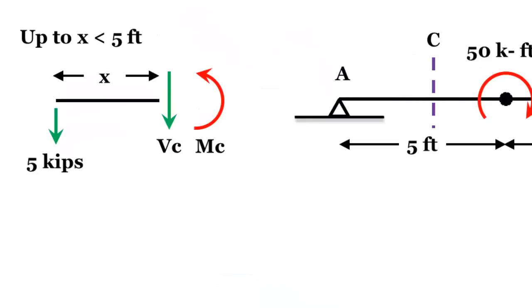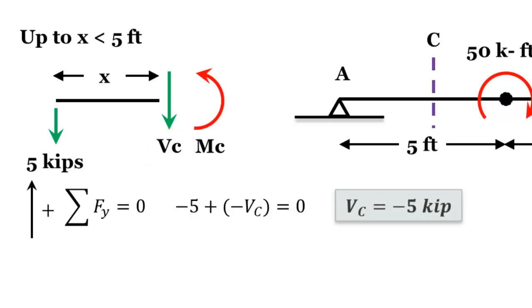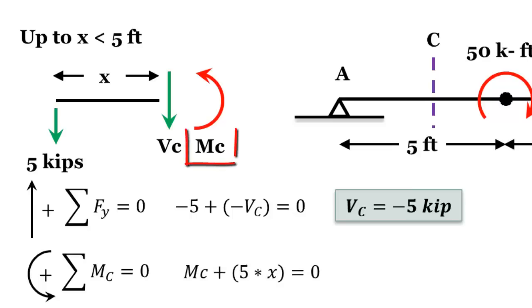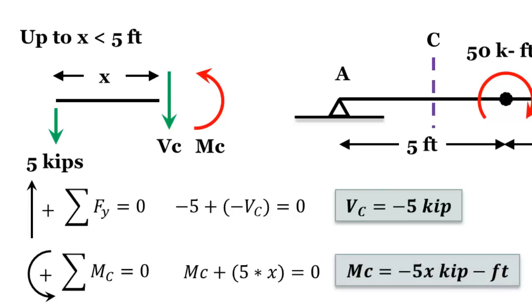For the first section, where X is less than five feet, summing forces on the section gives minus five plus minus VC equals zero, so VC equals minus five kips. Taking moments about point C gives MC plus five times X equals zero — the positive sign is because the 5x term produces a counter-clockwise moment. Solving gives MC equals negative 5x.